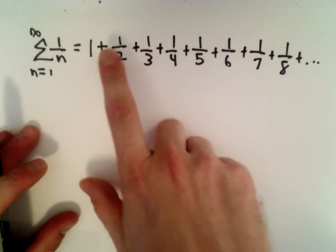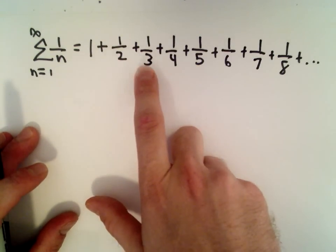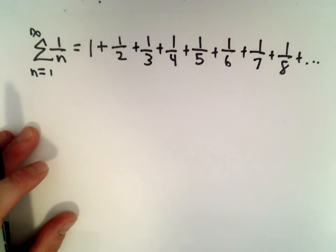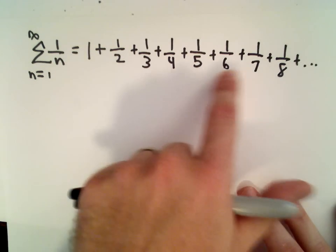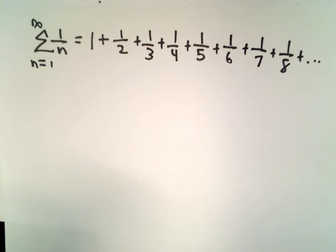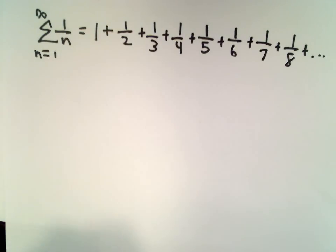The idea is the numbers are getting smaller clearly—they're decreasing: a half, then a third, then a fourth, then a fifth, sixth, seventh, eighth. The intuitive question is: are the numbers getting small enough fast enough so that when we add them all up, we get a finite number? The answer is no, and we're going to justify that right now.